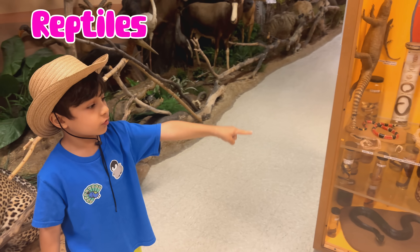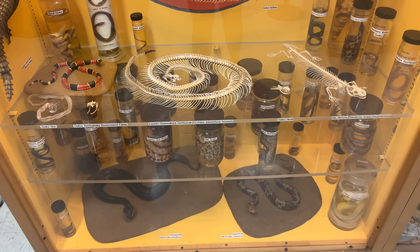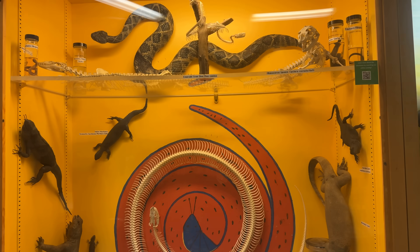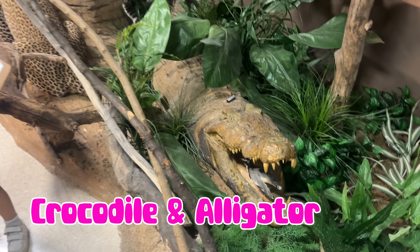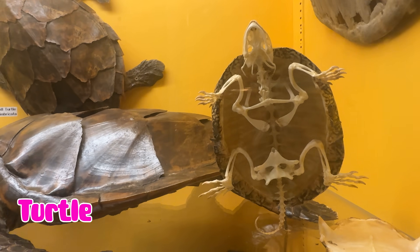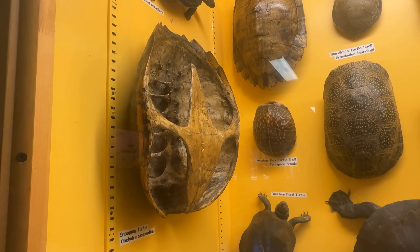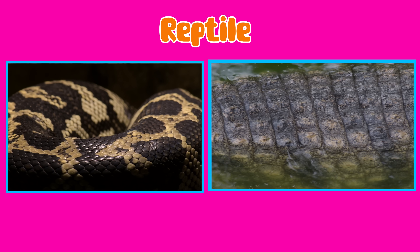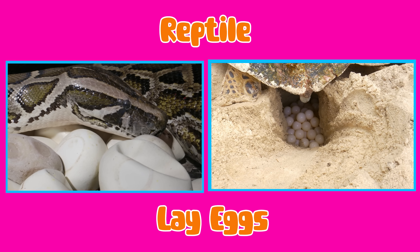Look at the reptiles. You can see different snakes and lizards. You can see crocodile and alligator. Look at different kinds of turtles and their shells. Reptiles are cold-blooded animals with scales and most lay eggs.